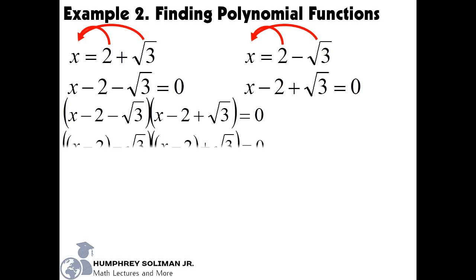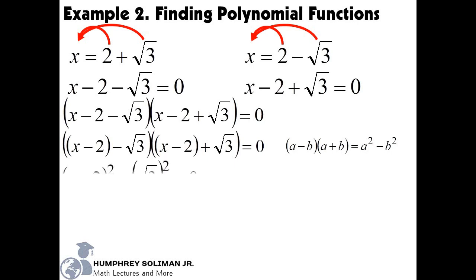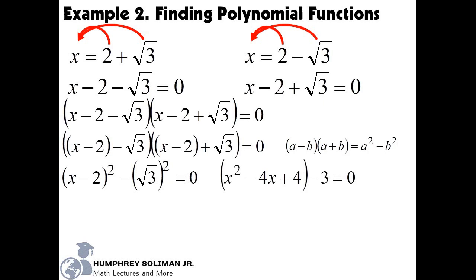Also, notice that we can write each quantity as binomials. And what we have now is a special product, the sum and difference of binomials. This will give us the difference of two squares — the square of the first term minus the square of the second term. We can expand the square of the first term into x squared minus 4x plus 4, and we can also simplify the square of the second term as minus 3. Simplifying further, we can get x squared minus 4x plus 1.